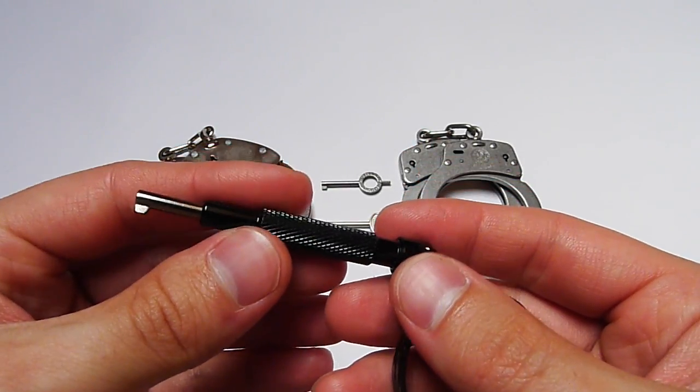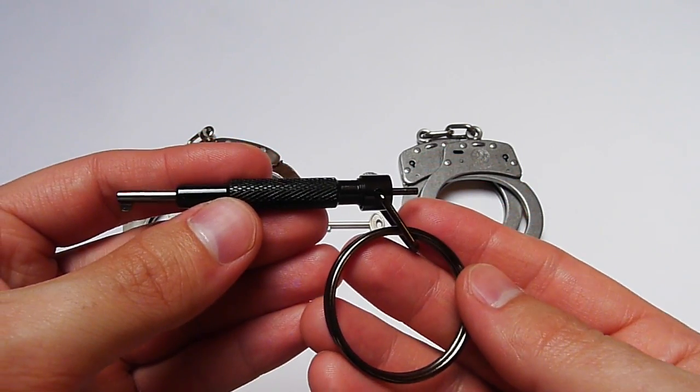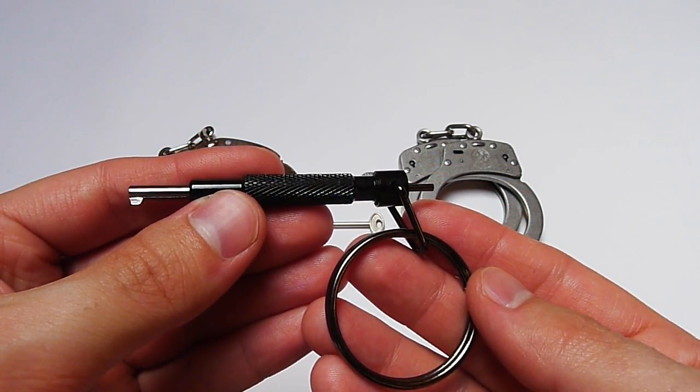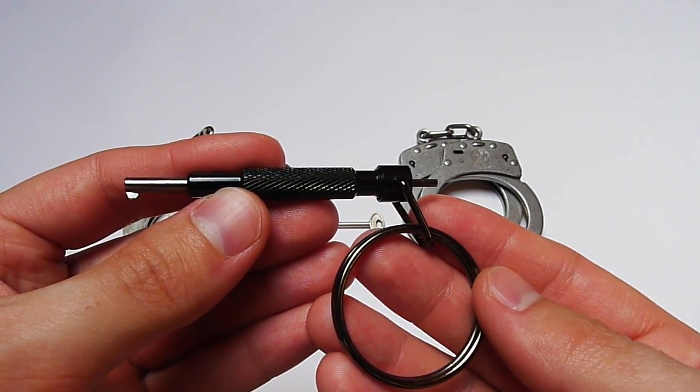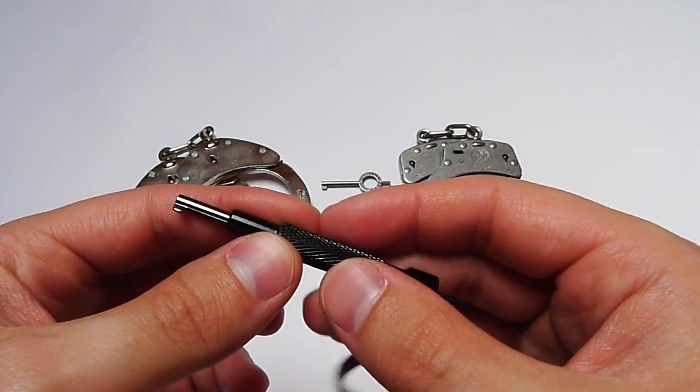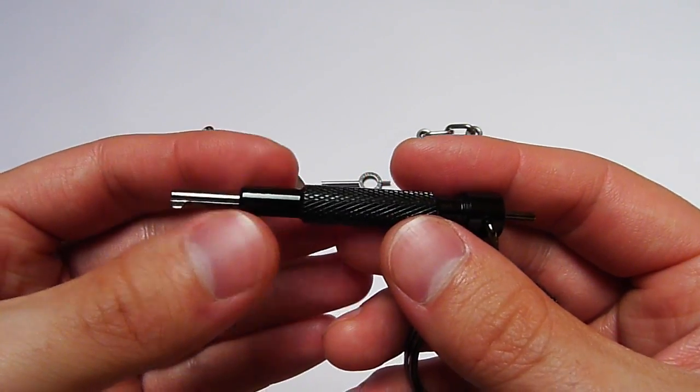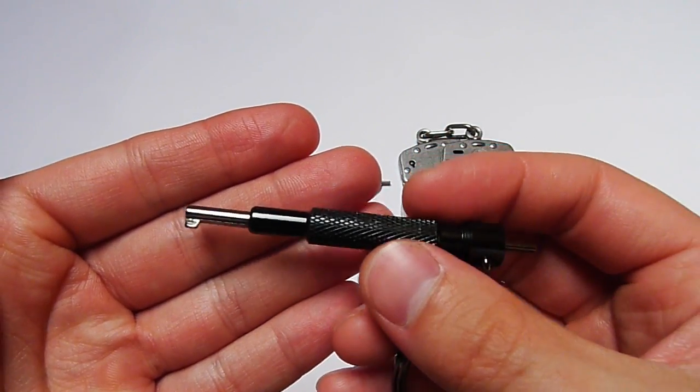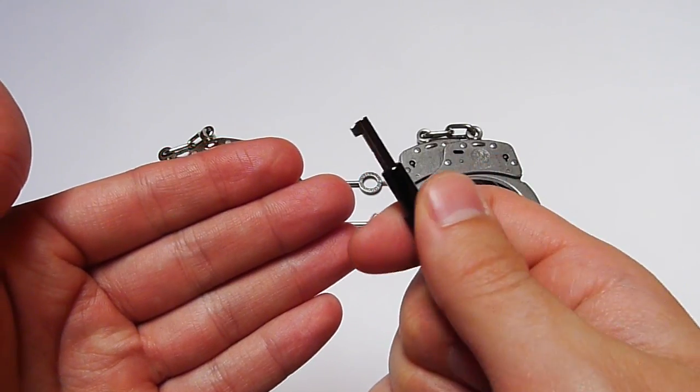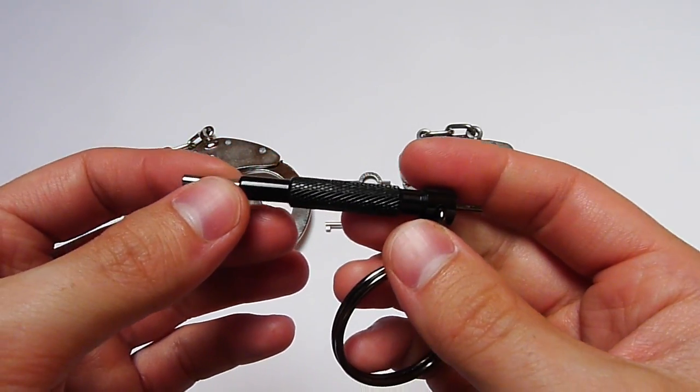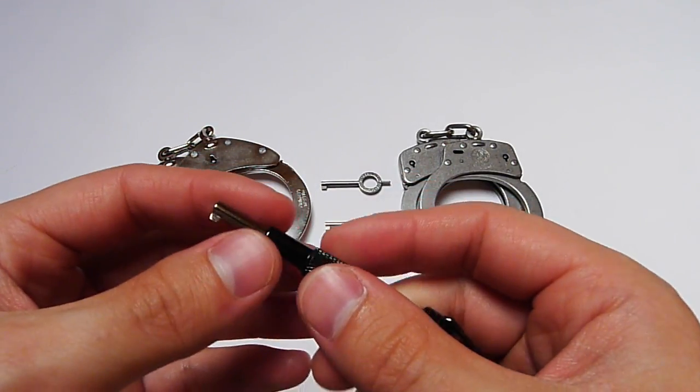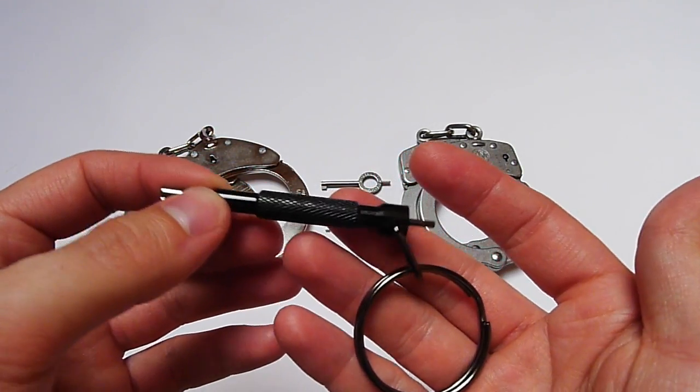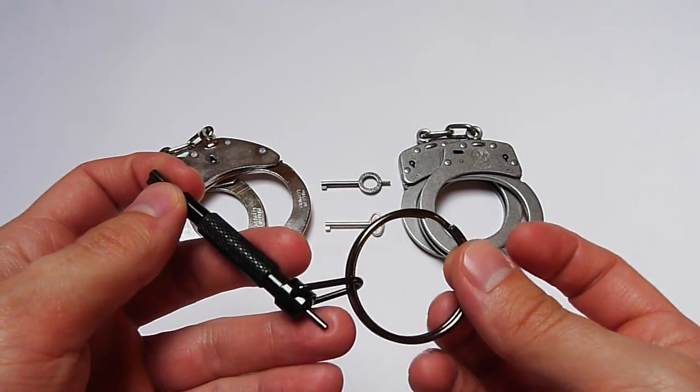I've bought this universal handcuff key at the Nordhandel homepage. I will link it below. I think it costs around five euros. The interesting thing is you can also use it with gloves if you have to work with gloves. It's bigger than the normal handcuff key, so this is also a very good idea. You can attach it to your belt, your key safe, maybe your keyring, whatever, and you will always have it at hand.